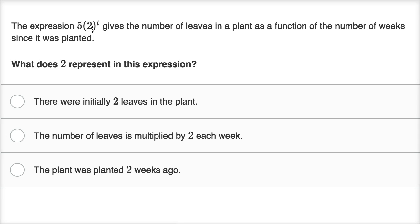The expression five times two to the t gives the number of leaves in a plant as a function of the number of weeks since it was planted. What does two represent in this expression? So pause this video and see if you can figure it out on your own.